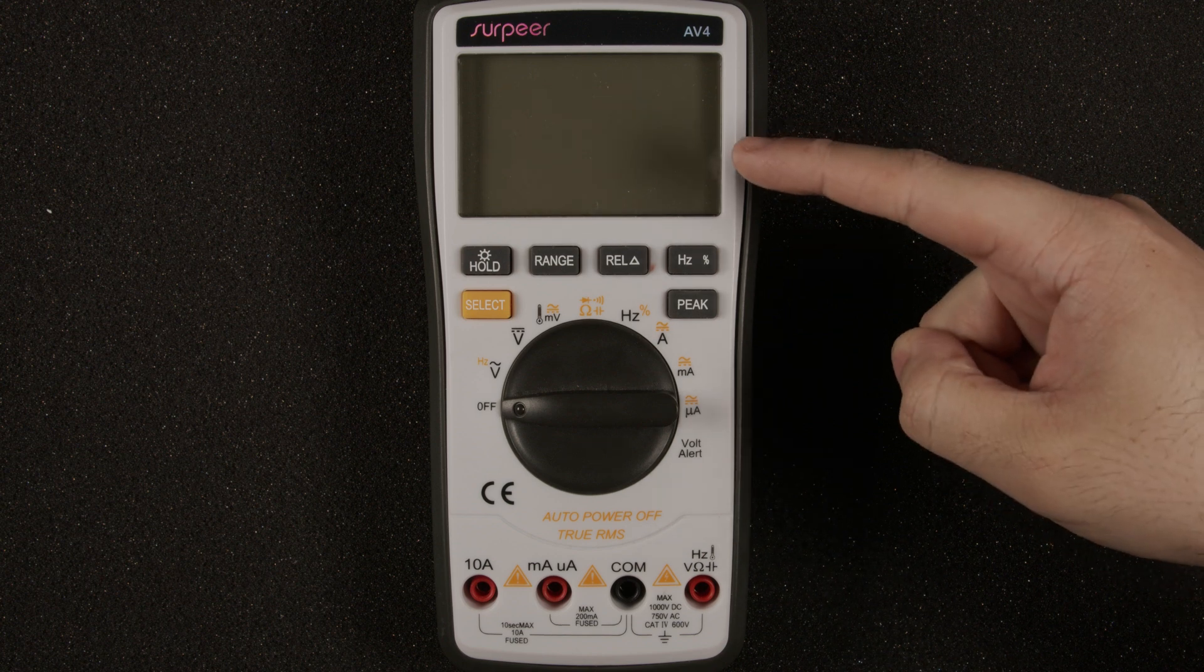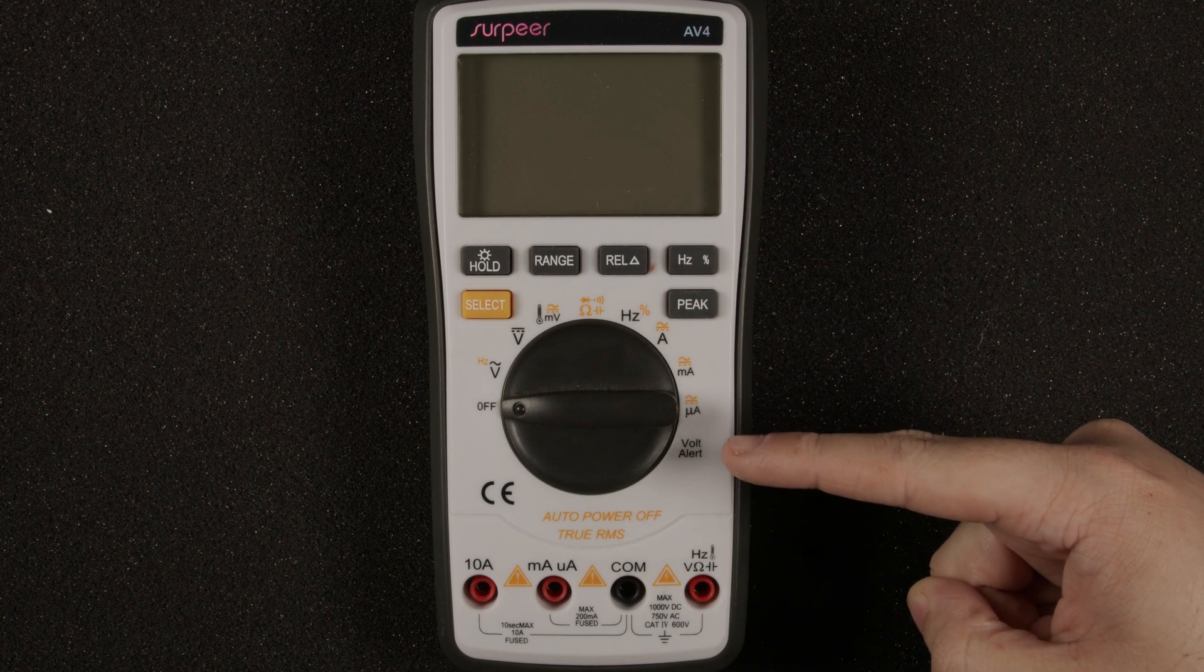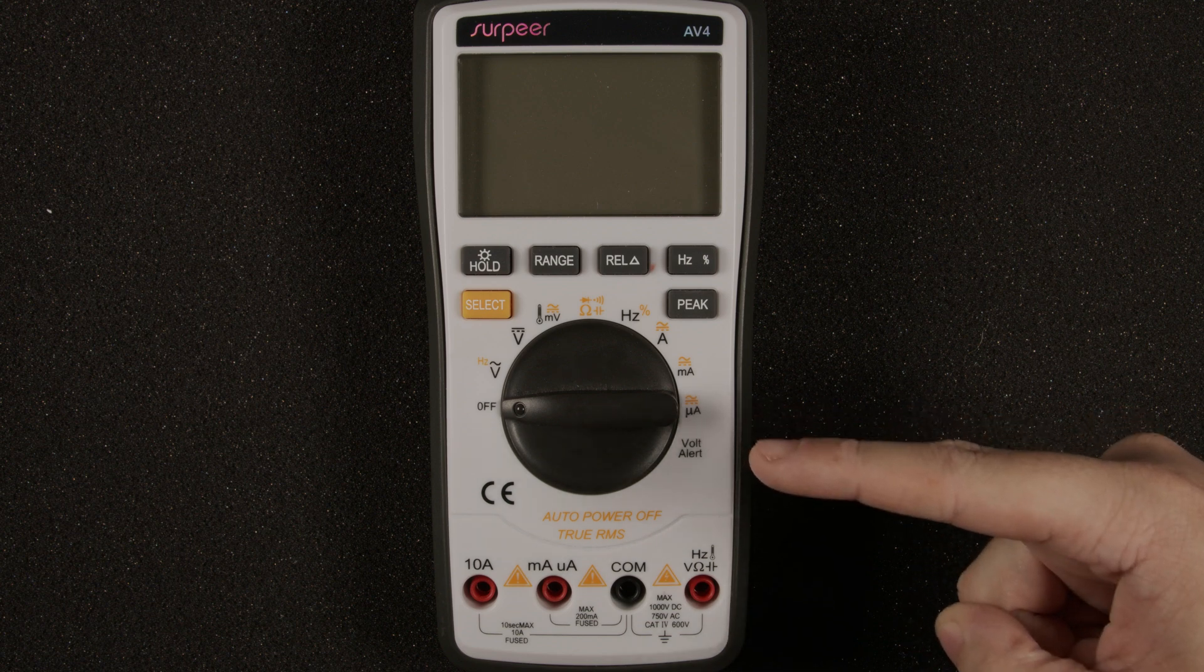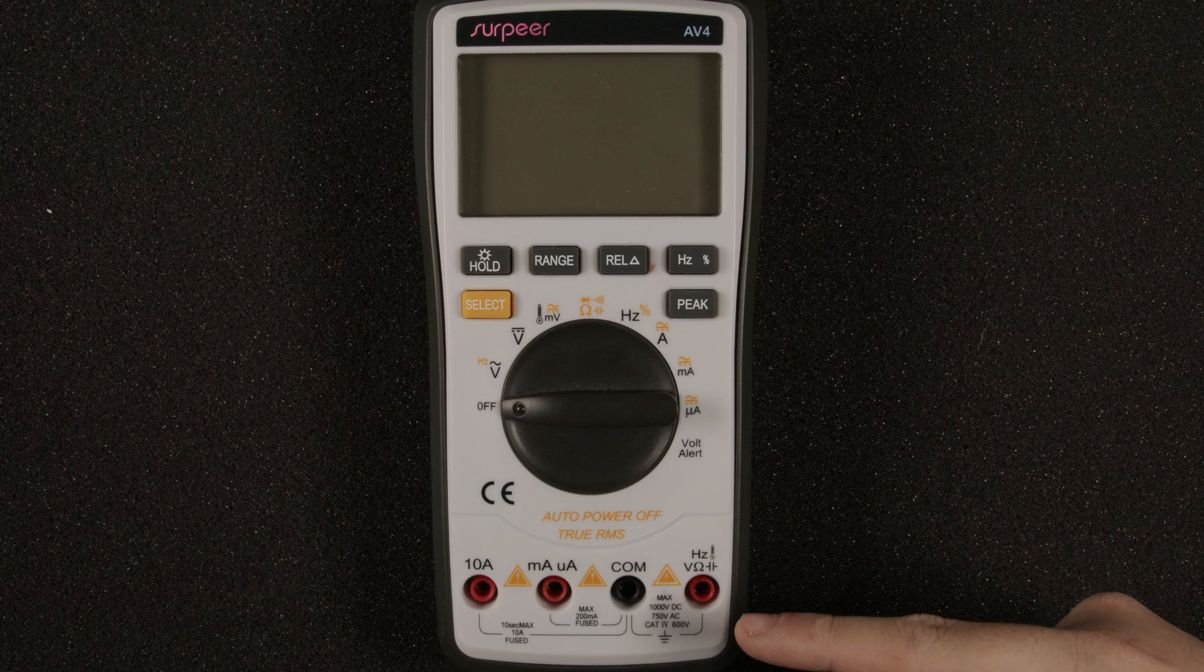Starting at the top we have the display, and this is where we're going to see the values that we measure in our circuit. Below that we have the dial, and this is where we're going to select the function of the multimeter that we want to use. At the bottom we have terminals, which is where we're going to be plugging our probes into.